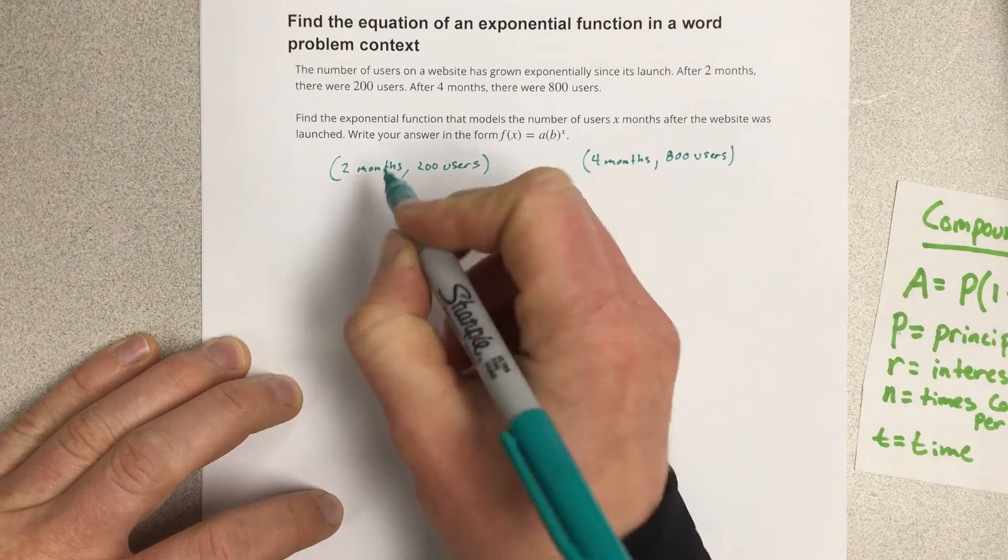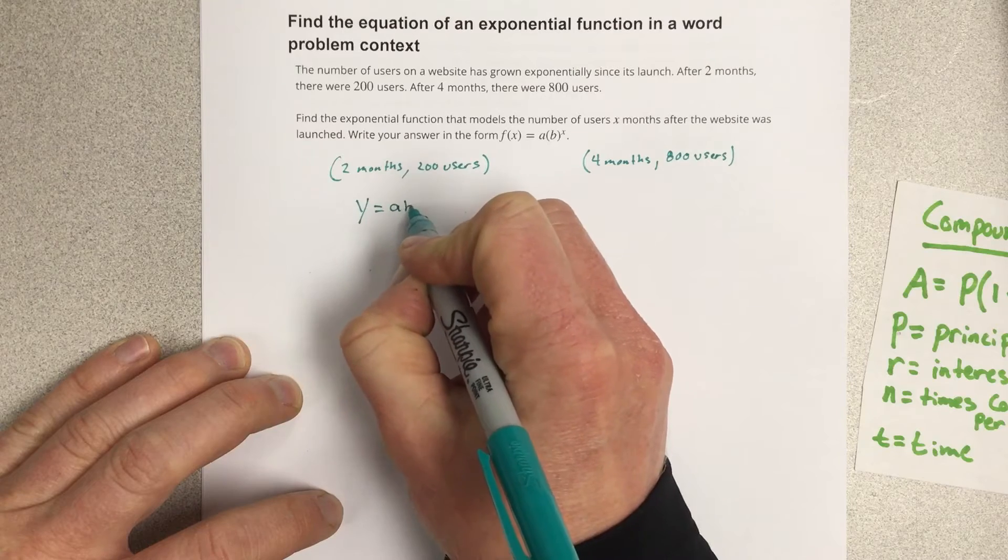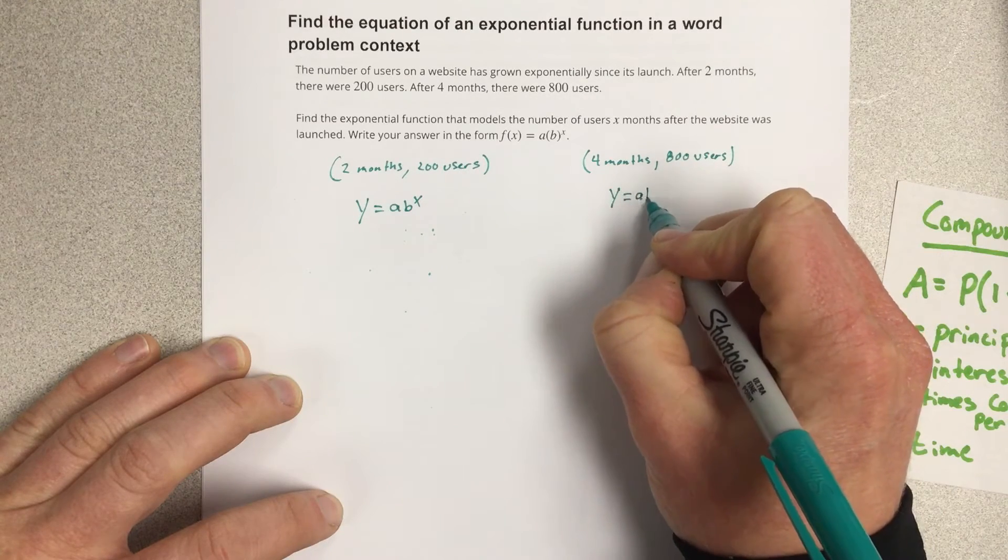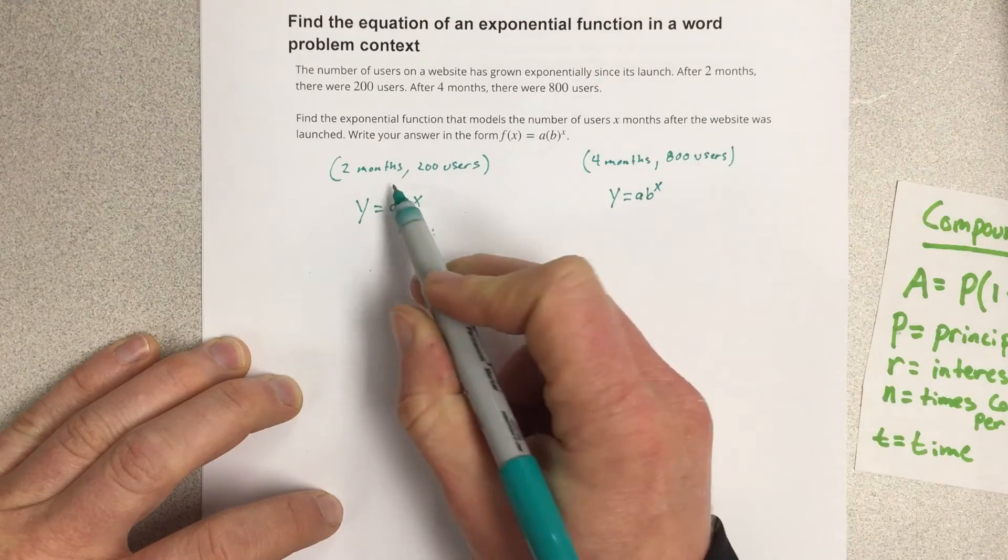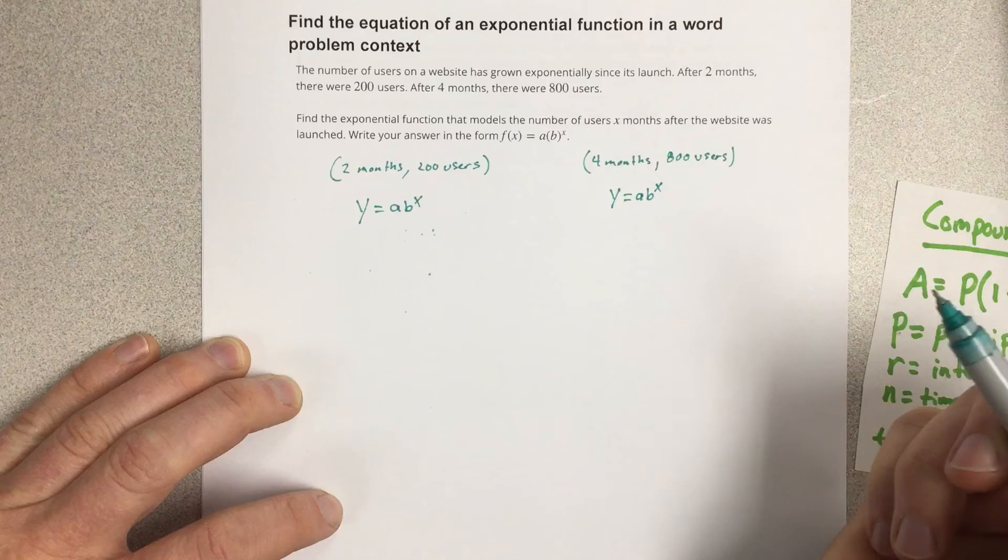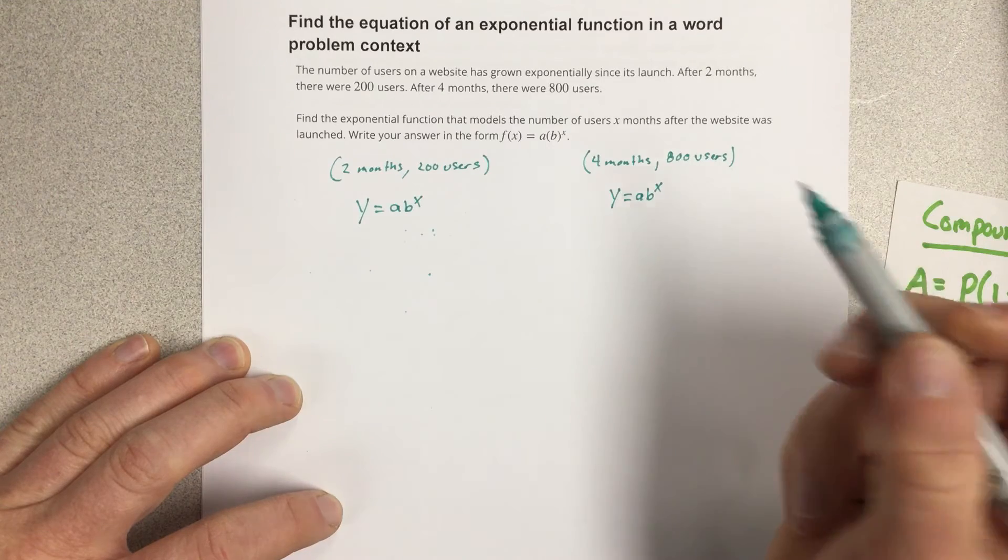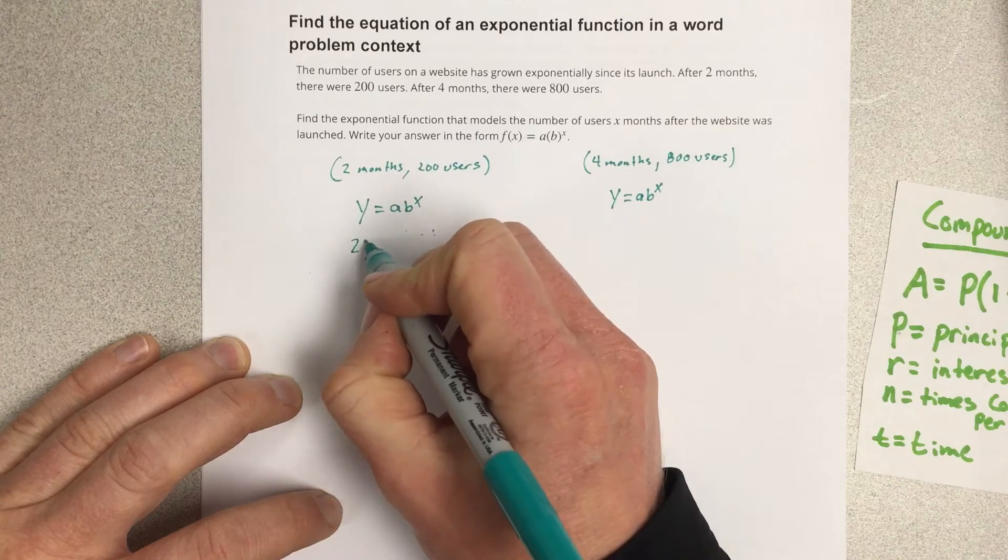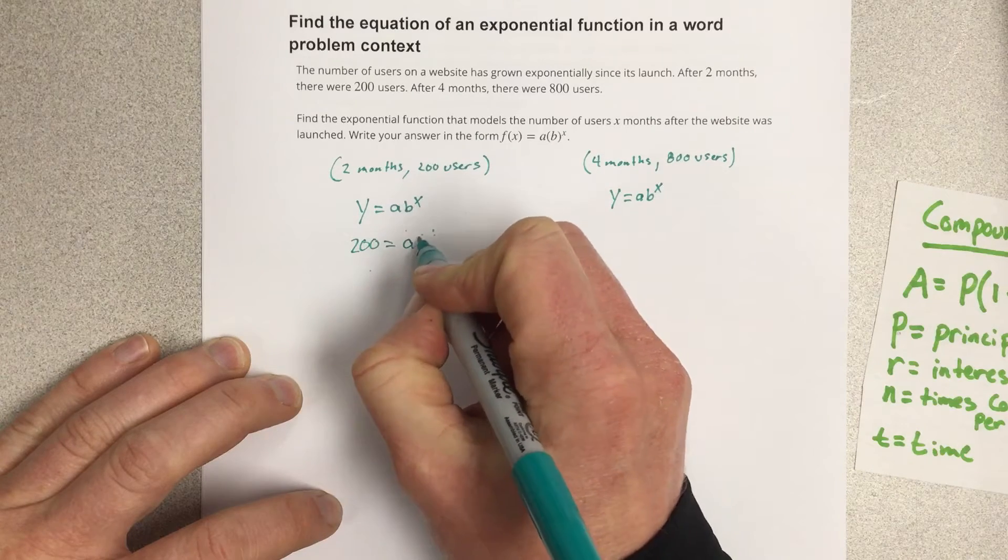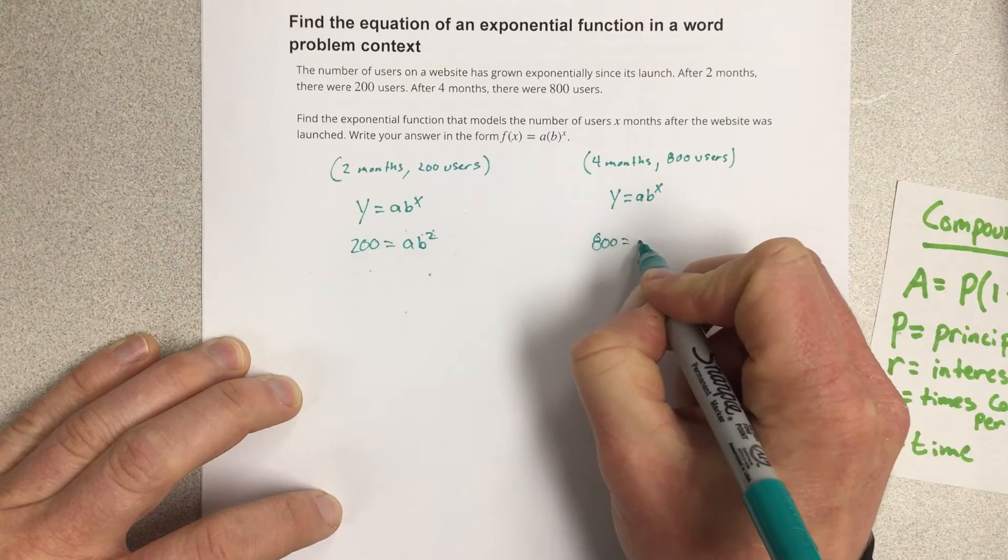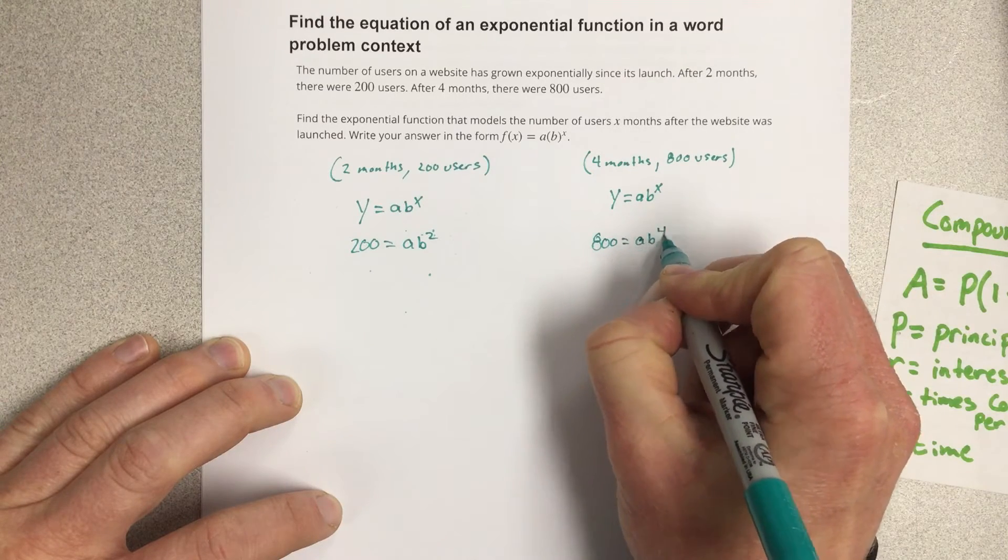So we're going to actually use y equals ab to the x to find this equation, but we're going to plug these two coordinates into this equation and we're going to use systems of equations to solve. So we're going to plug in 2 and 200 and that would be 200 equals ab to the second power and this would be 800 equals ab to the fourth power.